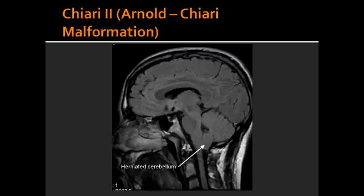In Arnold Chiari Malformation, there is also aqueductal stenosis and hydrocephalus. This condition often presents with thoracolumbar myelomeningocele and paralysis below the defect.